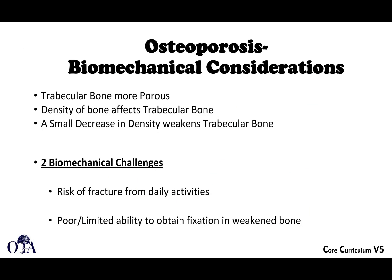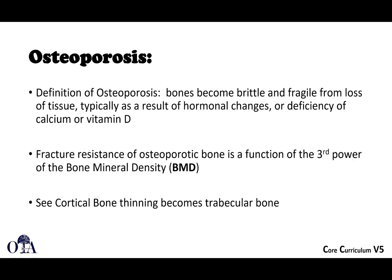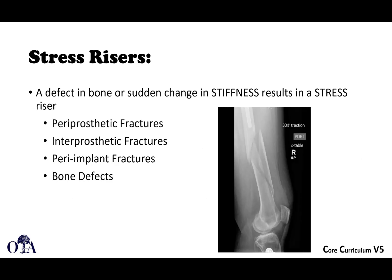With osteoporosis, trabecular bone becomes more porous. There are two main challenges: less dense bones create a risk of fractures from just activities of daily living and low-energy falls, and from a surgeon's standpoint there is limited ability to get good fixation because the bone is not dense and implants don't hold as well. Bones become brittle and fragile due to loss of bone density. Fracture resistance of osteoporotic bone is a function of the third power of bone mineral density, and cortical bone becomes very thin as well.